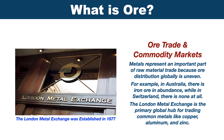Metals represent an important part of raw material trade because their distribution globally is uneven. For example, in Australia there is iron ore in abundance, while in Switzerland there is none at all.